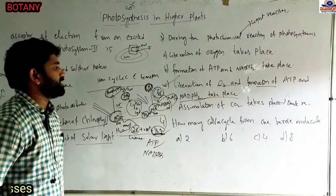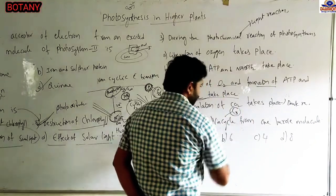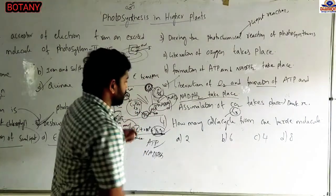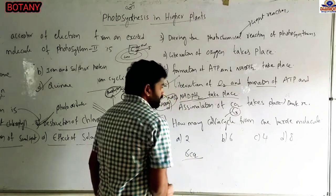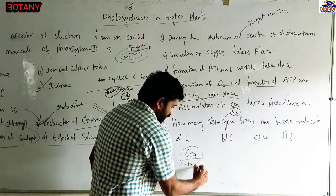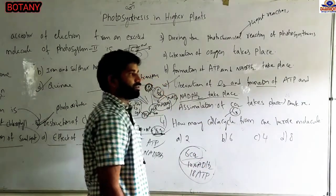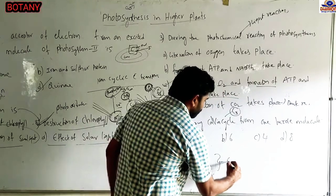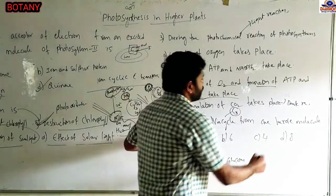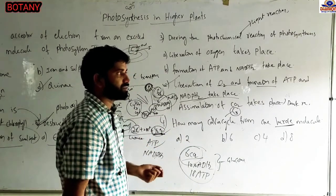Next question: How many Calvin cycles are required for one hexose molecule? The Calvin cycle is also called the C3 cycle. According to the C3 cycle, for the synthesis of one glucose molecule, six CO2 molecules are required. Also required are 12 NADPH2 molecules and 18 ATP molecules. So this is for one glucose molecule through the C3 cycle.